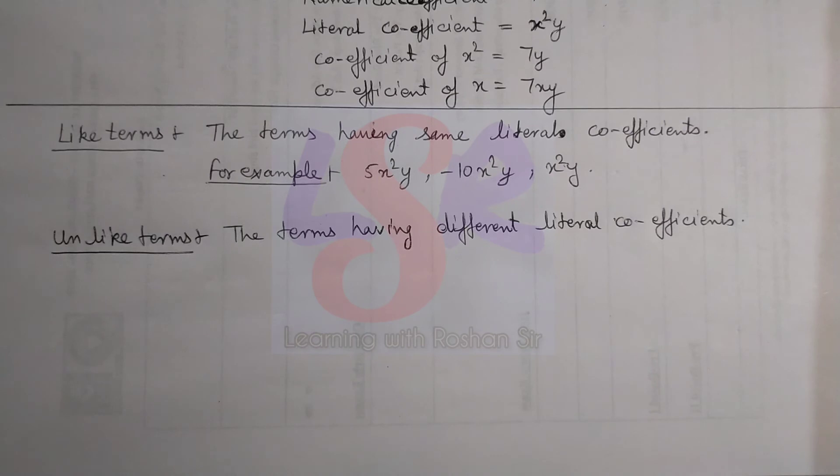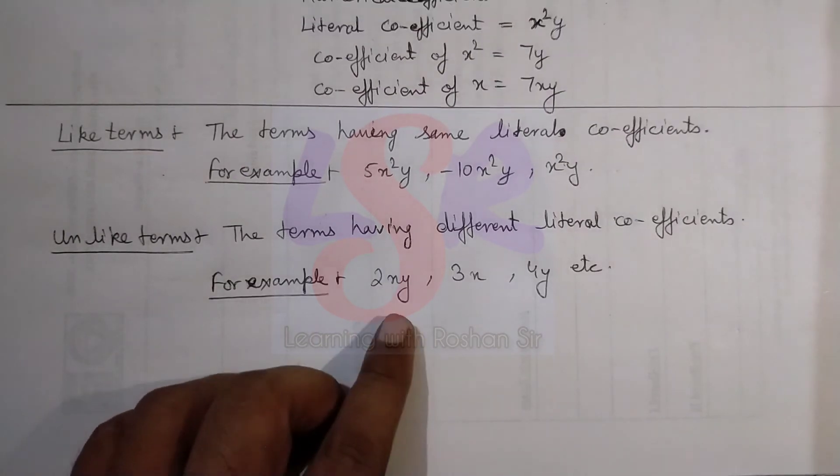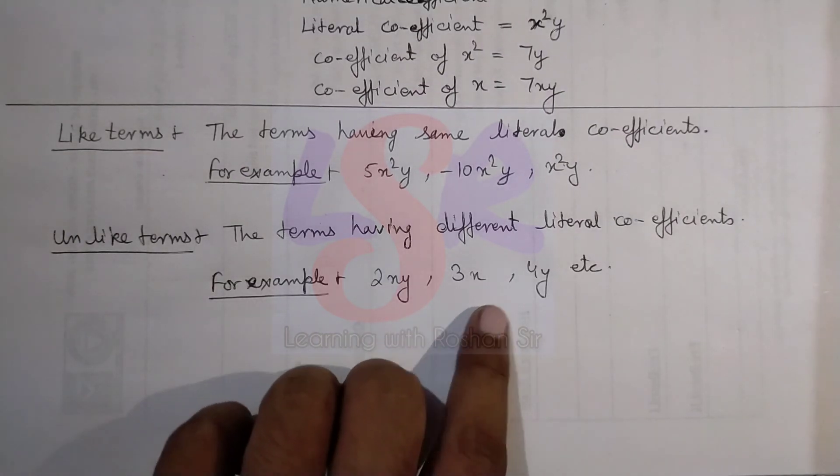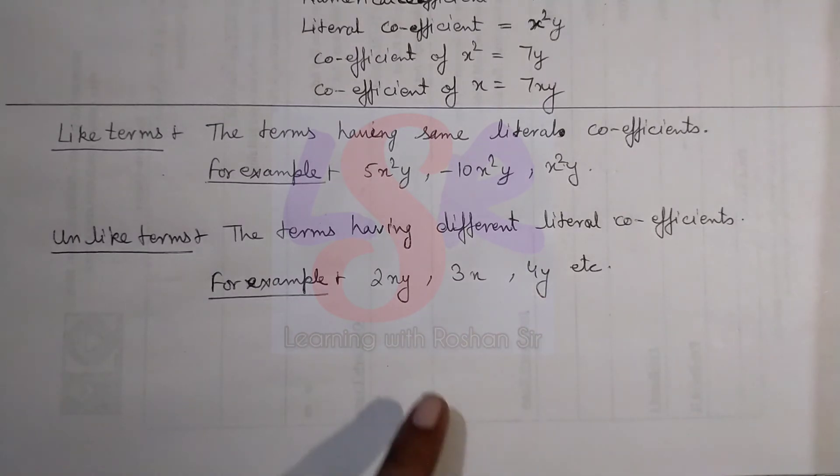Then we have unlike terms. Terms having different literal coefficients. For example, 3xy, xy, minus 4y, etc. In all of these cases we have different literal coefficients.